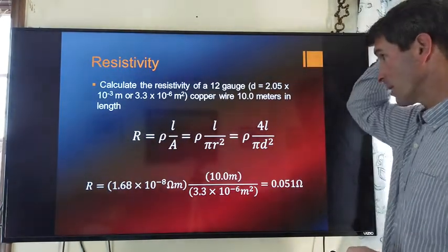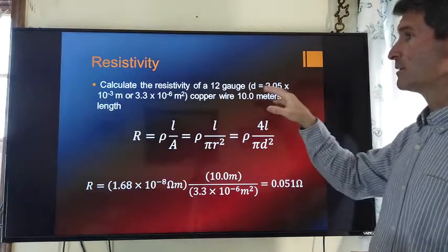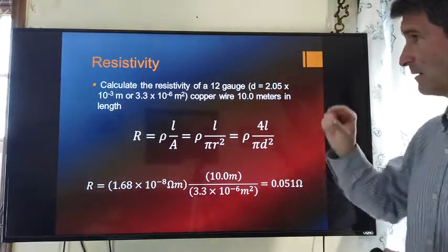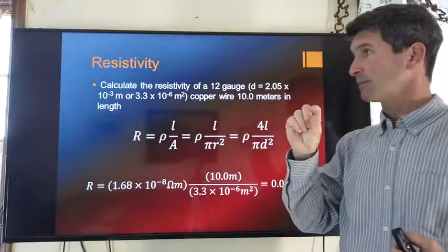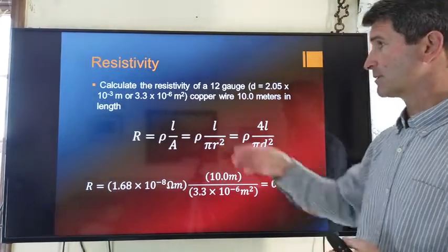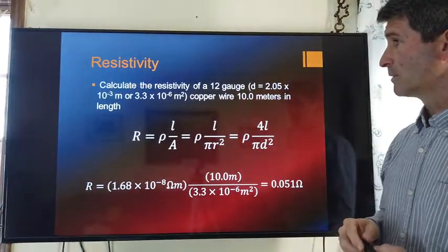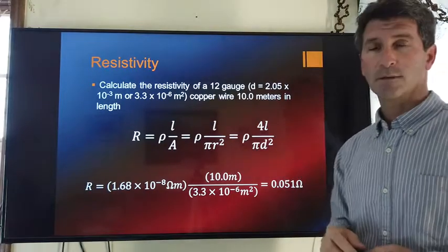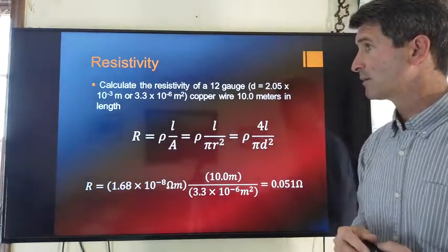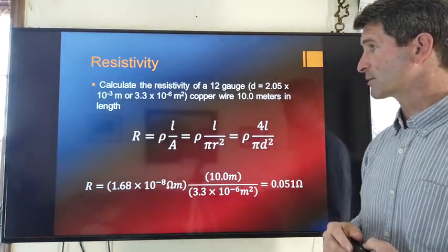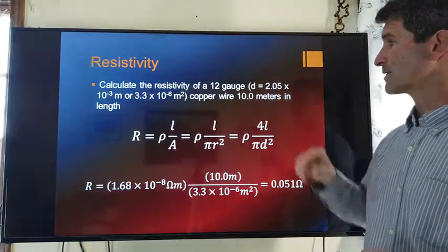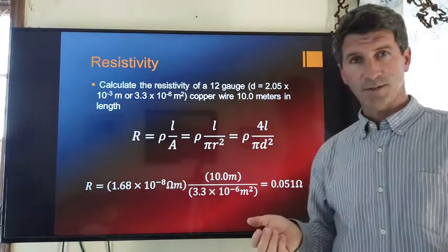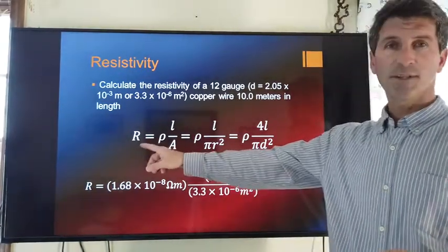And, the diameter of 12 gauge wire is 2 times 10 to the negative 3 meters. So, it's about a diameter of 2 millimeters or roughly a cross-section of 3.3 times 10 to the negative 6 meters squared. Copper wire, it's going to be 10 meters long. What is its resistance? Well, the resistance of a wire, as we said earlier, is equal to the resistivity times the length of the wire divided by the cross-sectional area.